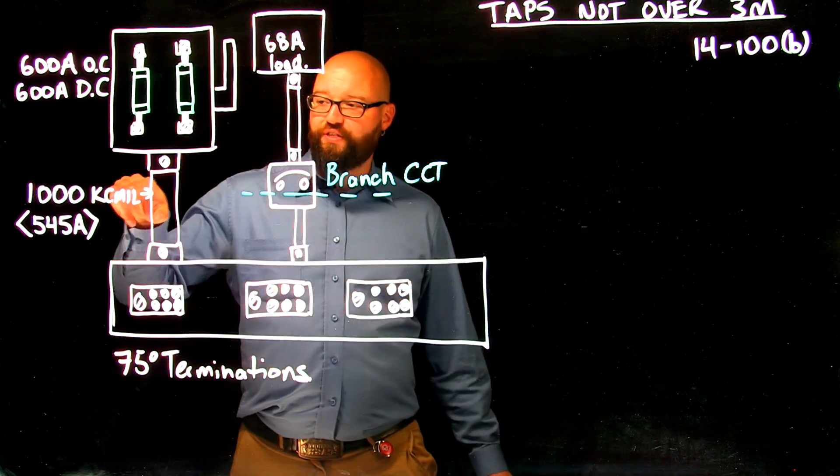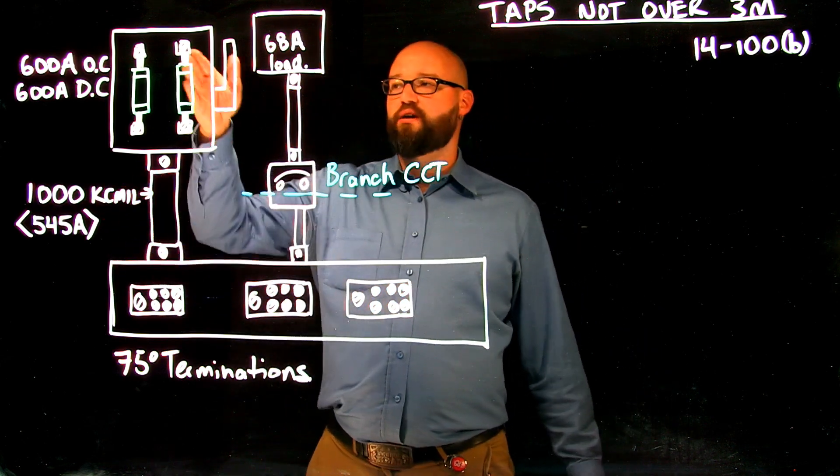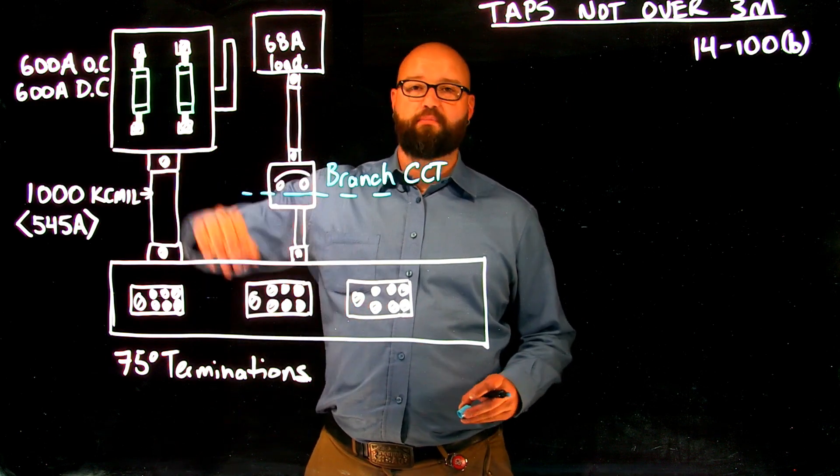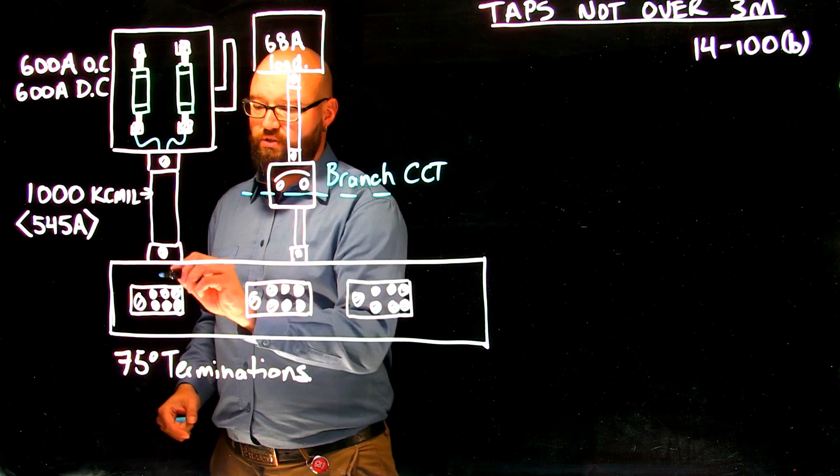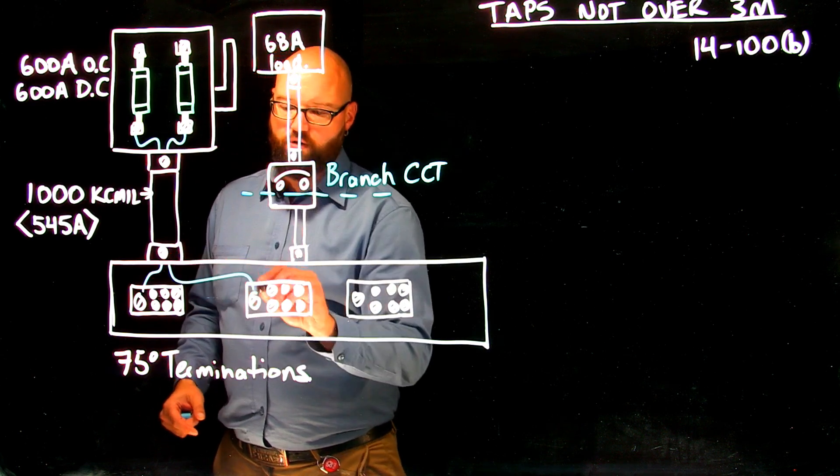We want to point out we have a thousand KC mil is the feed from our 600 amp overcurrent 600 amp disconnect. So we would have these thousand KC mils out into our taps.